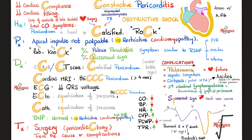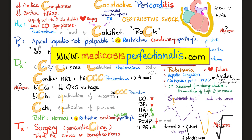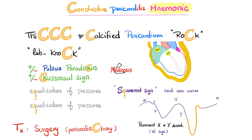Sometimes there is accumulation of actual lymph in the peritoneum because everything is blocked and backing up. Constrictive pericarditis mnemonic: very thick calcified pericardium, hard as a rock, dystrophic calcification, lub-knock instead of lub-dub, pulsus paradoxus, Kussmaul's sign, equalization of pressures, square root sign, treated with pericardiectomy.